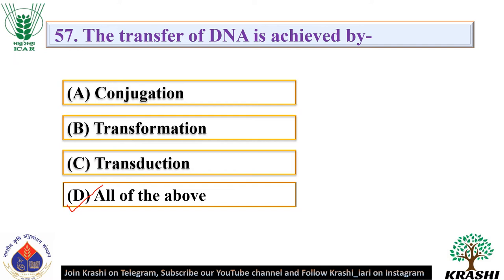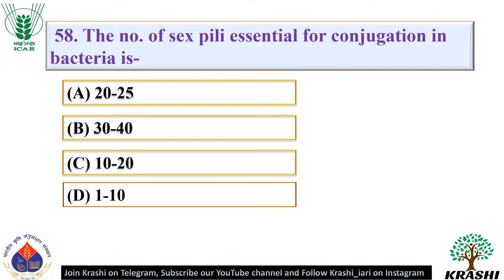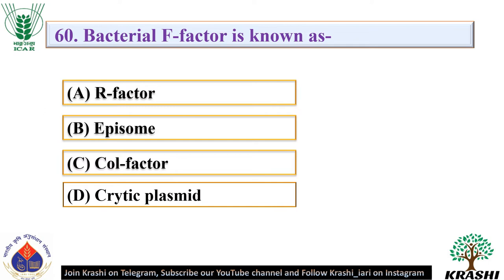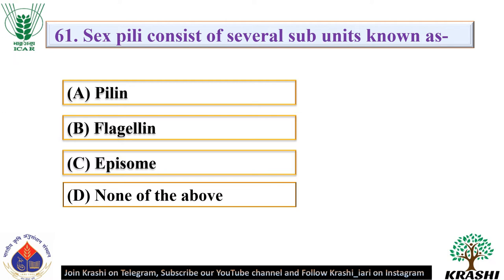Question number 58: The number of sex pili essential for conjugation in bacteria is. The correct answer is option D — 1 to 10. Question number 59: Both flagella and pili of bacteria are originated from — they are originated from the cell membrane. Question number 60: Bacterial F factor is known as — it is known as episome. Question number 61: Sex pili consist of several subunits known as — they are known as pilin.